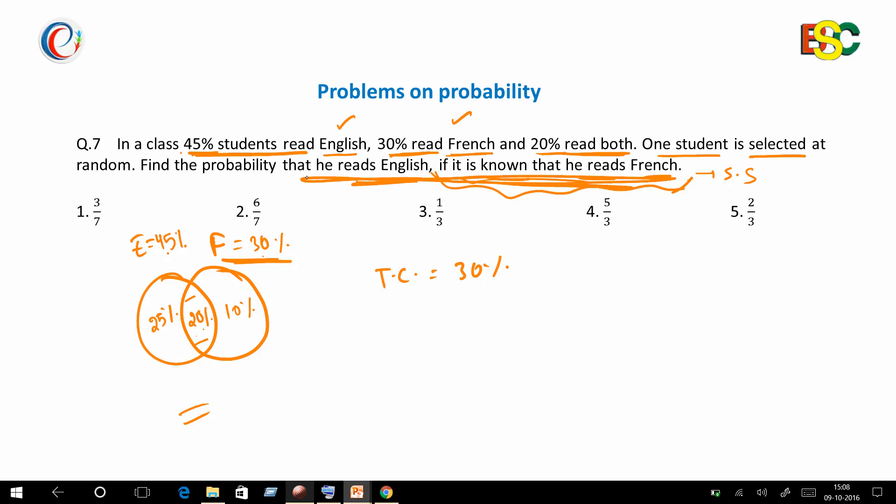to find the probability that he reads English. There are 20% students who read both French and English, so our favorable cases are 20%, and thus the probability becomes 20 over 30, which equals 2 by 3. So option 5 is the correct answer.